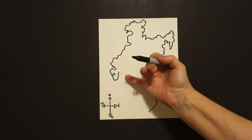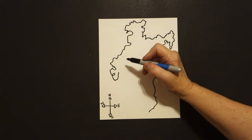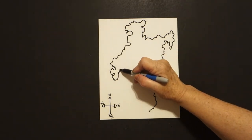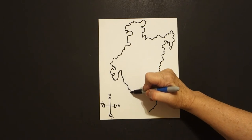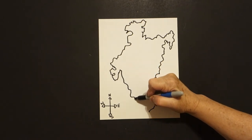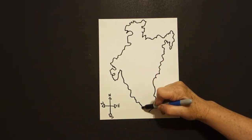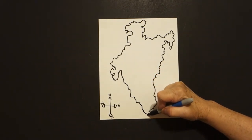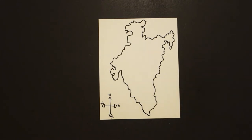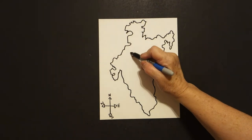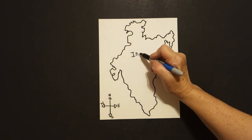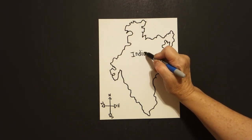Come back over here to the left. We're going to draw a little straight line, curve line, straight line, curve line, straight line, curve line, curve line, down, up, and connect. What is this? It's India!